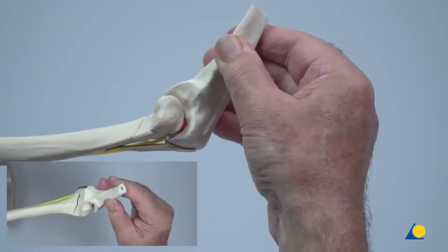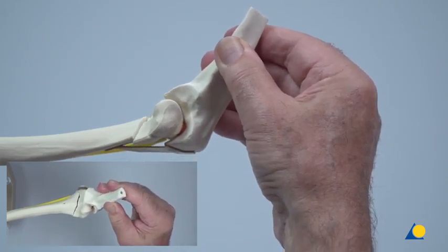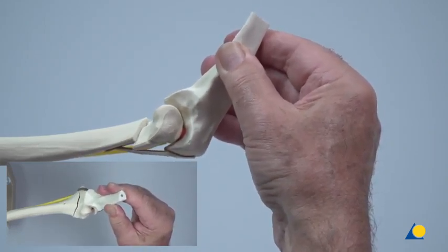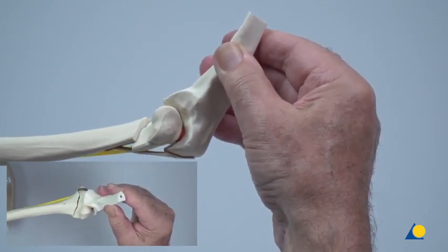Observe that if the fragment is translated slightly medially or laterally, the axis of the forearm is unaffected. In addition, slight medial or lateral translation can be corrected with relative ease.